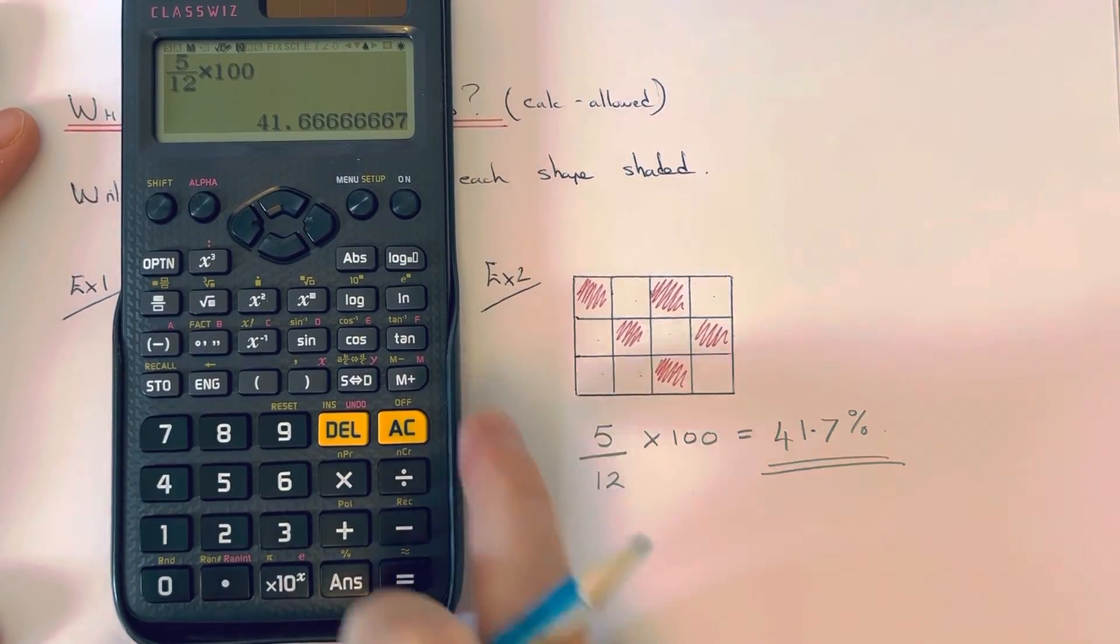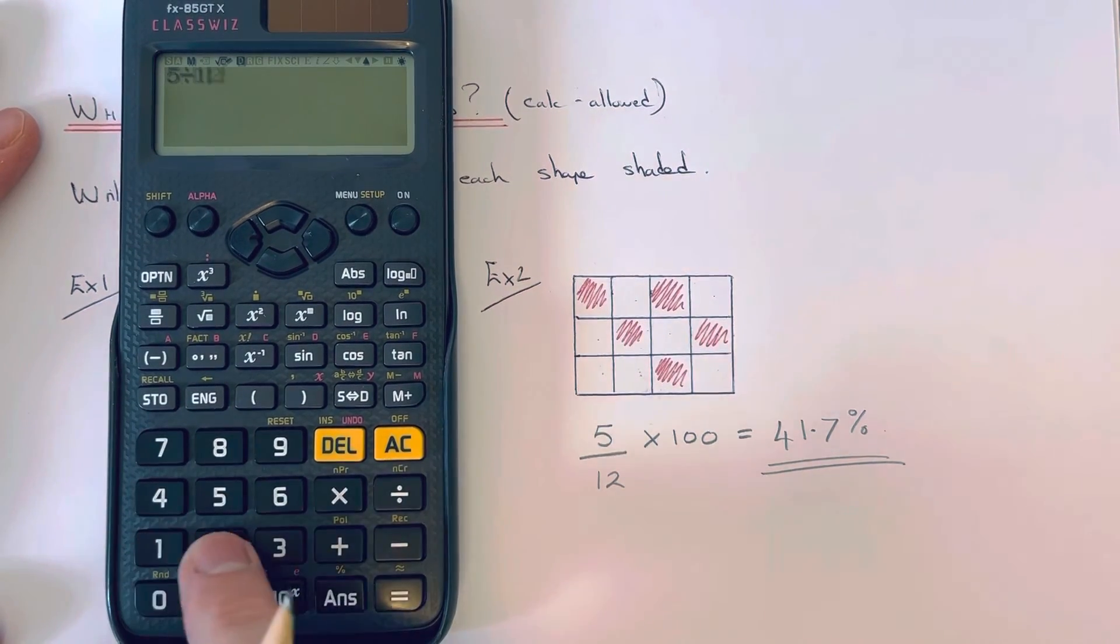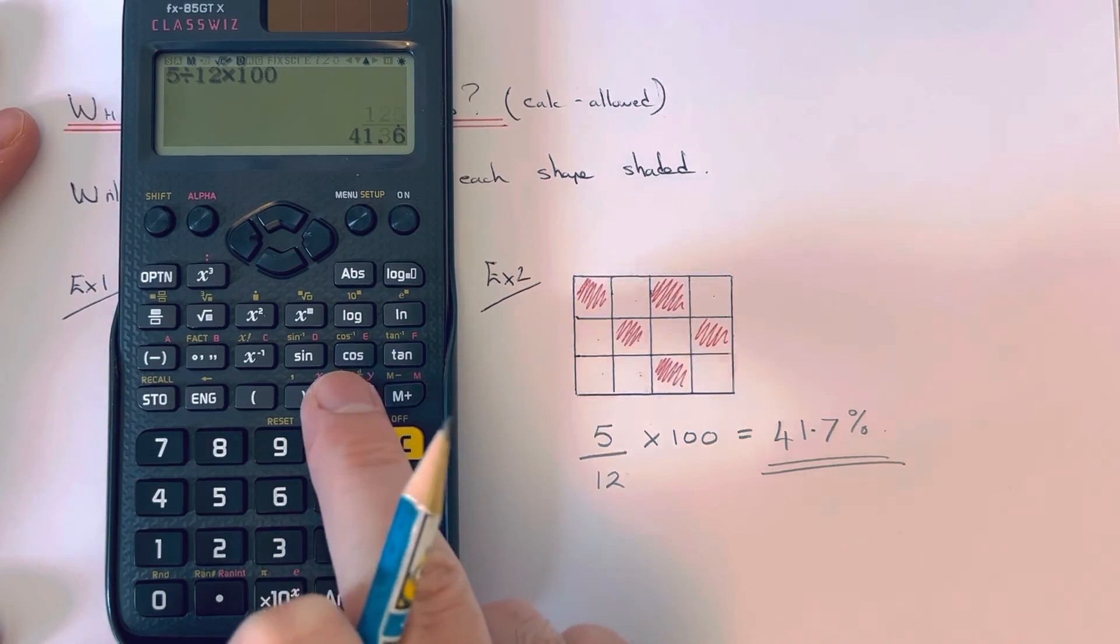If you don't have your fraction key on your calculator, remember you can do 5 divided by 12 times 100, and that will give you the same answer.